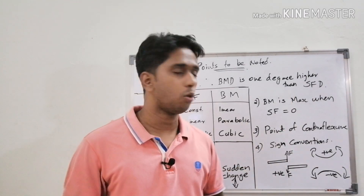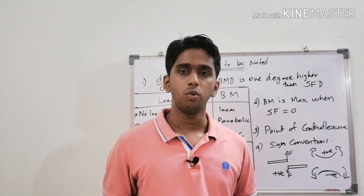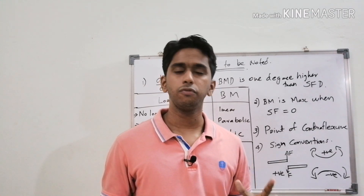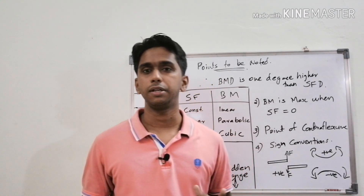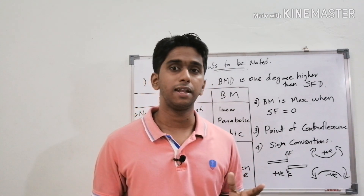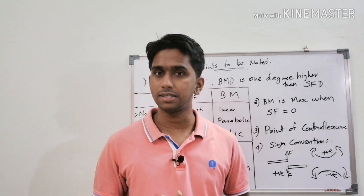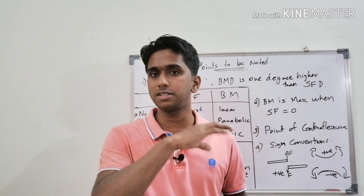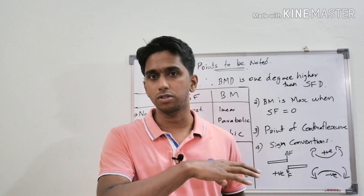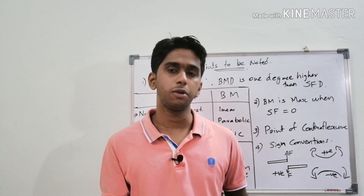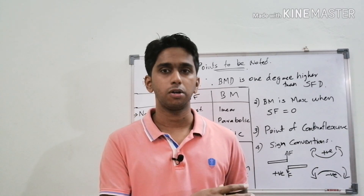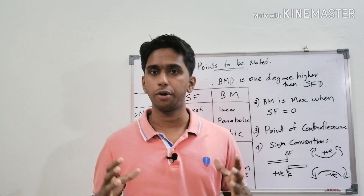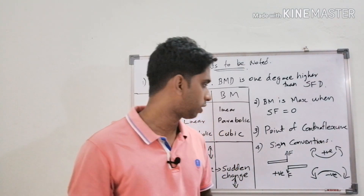The third point is the point of contra flexure. Point of contra flexure is a point at which the bending moment changes its sign — that is, from positive to negative or negative to positive. That particular point is known as the point of contra flexure.